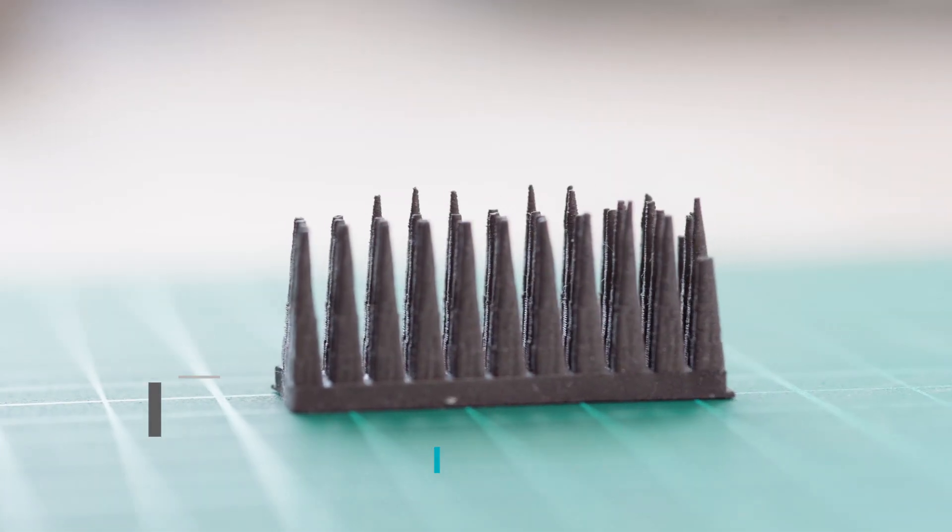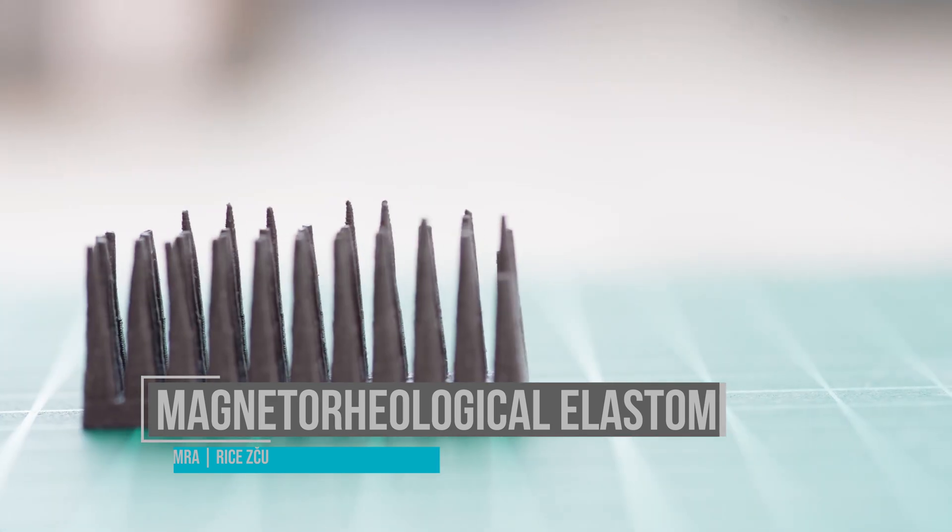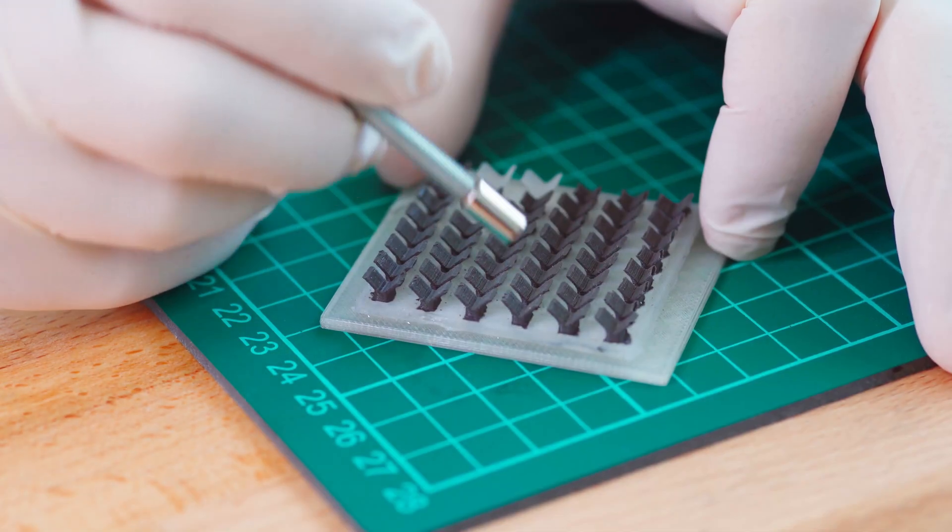What if iron was a flexible material? What if you could use an external magnetic field and control flexible structures?